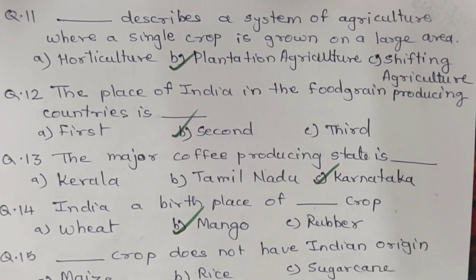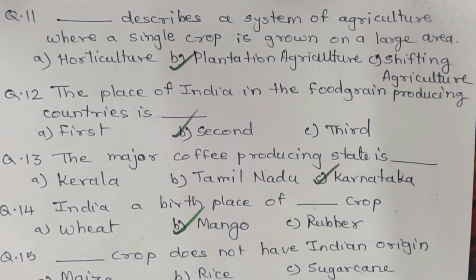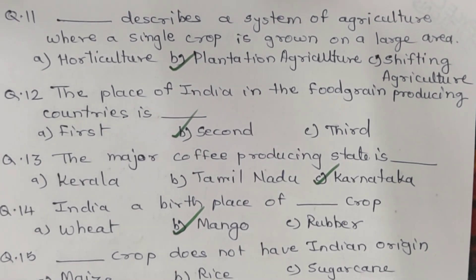Question 13. The major coffee producing state is which? Option A. Kerala. B. Tamil Nadu. C. Karnataka. And the correct answer is C. Karnataka.